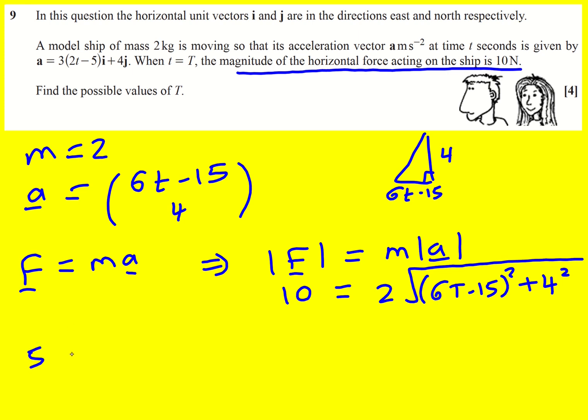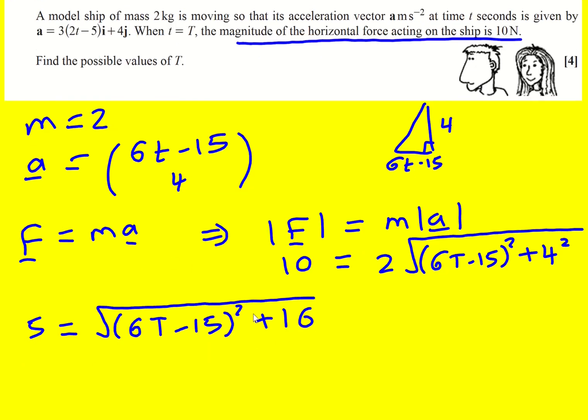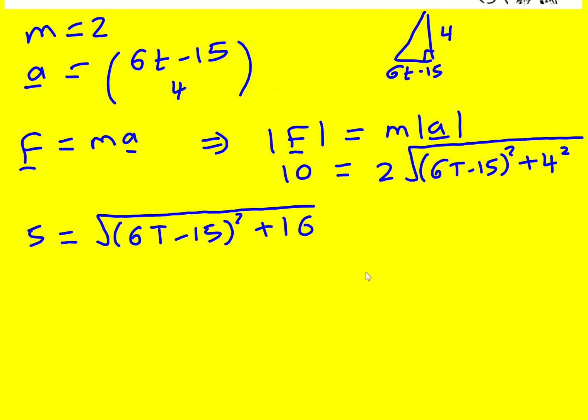So first of all divide through by 2, so 5 is going to equal this, and then square it. You could square it straight away but you'd have to square the 10 and square the 2 and then square this. So it just makes sense to get the square root by itself. Now square, so 25 is going to equal 6T minus 15 squared plus 16.